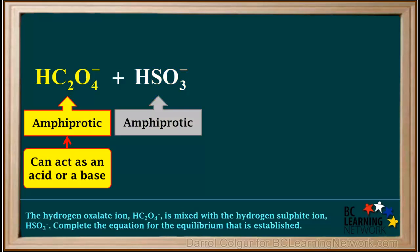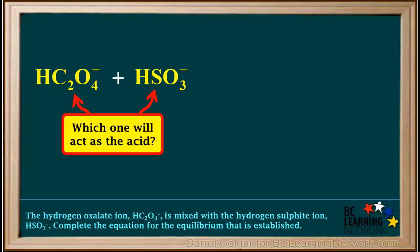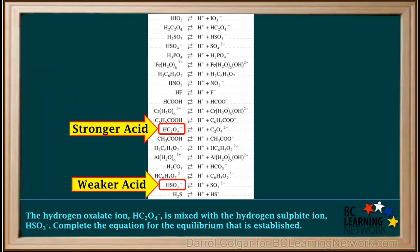Because HC₂O₄⁻ is amphiprotic, it is able to act either as an acid or as a base. Because HSO₃⁻ is amphiprotic, it is also able to act either as an acid or as a base. So the question is, which one of these will act as the acid in the forward reaction? We find out by locating both of these on the left side of the acid table and comparing their strengths. We see that HC₂O₄⁻ is a stronger acid than HSO₃⁻.